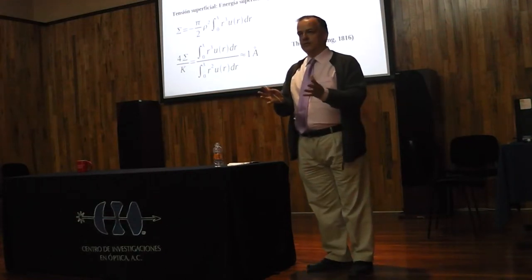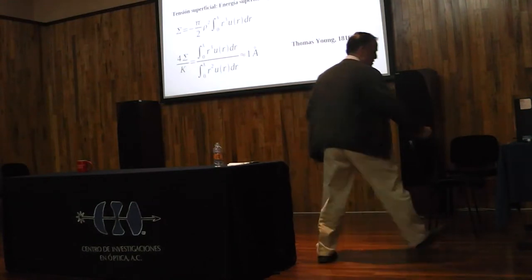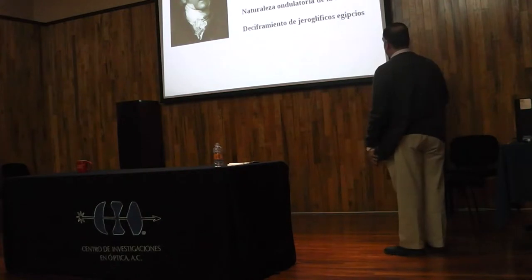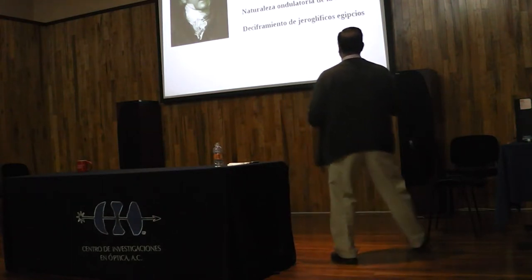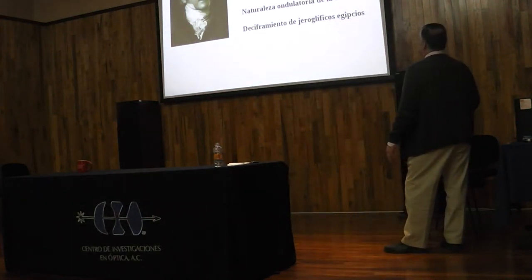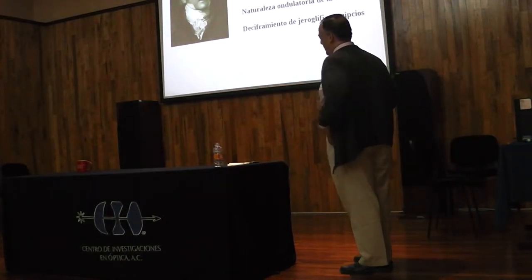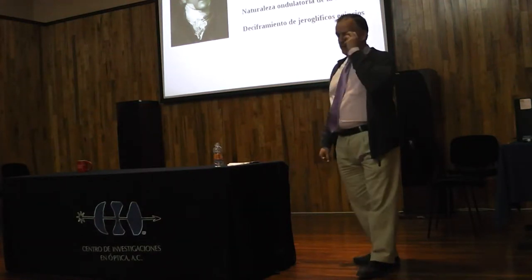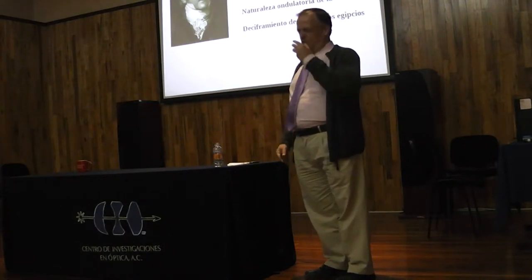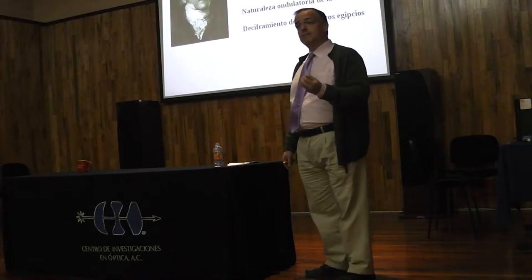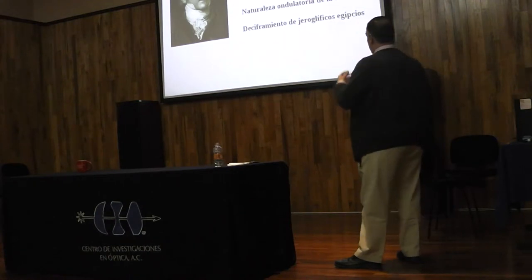Thomas Young is very well known for several results. In optics he is known for his experiments on the nature of light. He was also a physician — he did studies on the working of the eye, and he was the one who coined the term astigmatism, explaining this optical problem in terms of the working of the eye. He is also well known for work on the deciphering of Egyptian hieroglyphics.